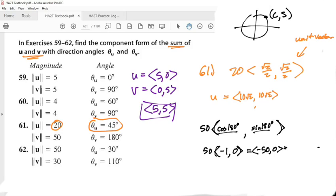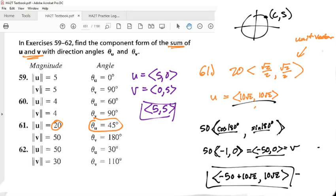So this is going to be our other vector, which is V. And now we add them together. We have to add this guy with this guy, so that's going to be negative 50 and then you have 10√2, comma, and then you've got to add the other one, 0 and 10√2, so it's just 10√2. So this is the sum of U and V vectors.